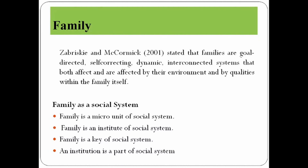First, we can discuss about family. According to Sabrick and McCormick (2001), families are goal-directed, self-correcting, dynamic, interconnected systems that both affect and are affected by their environment and by the qualities within the family itself. We can say family is a micro unit of social system, an institution and key part of the social system.